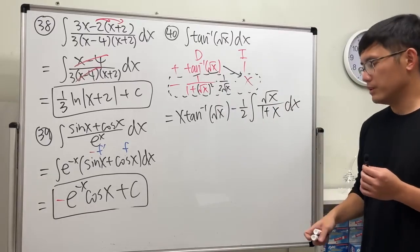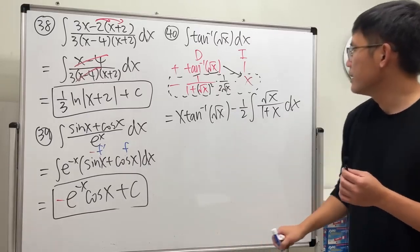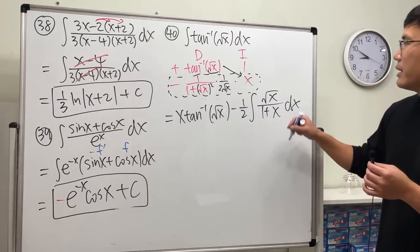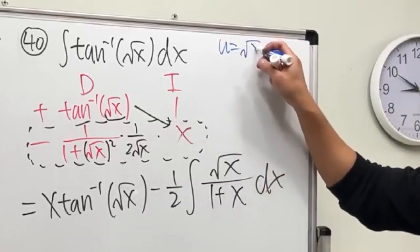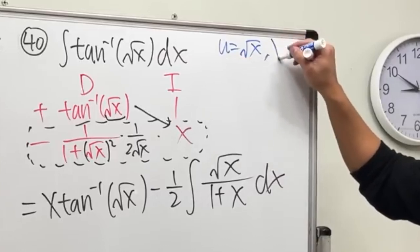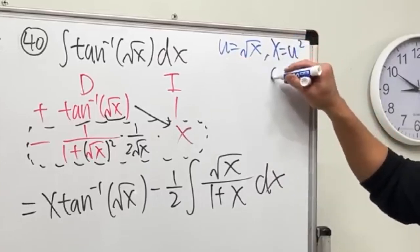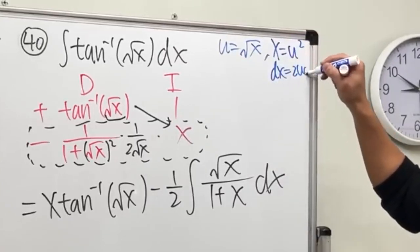Well, I'll just do a u-sub real quick. So perhaps I will do the u-sub right here. Then u equals square root of x, and we can see x is u squared, dx is 2u du.